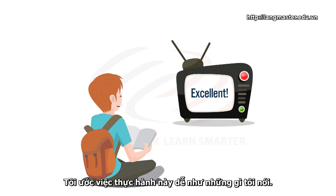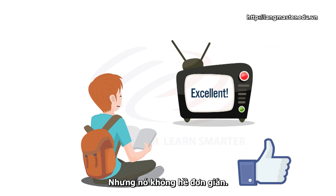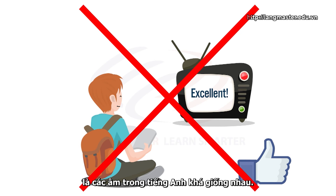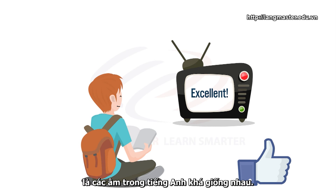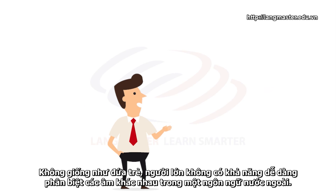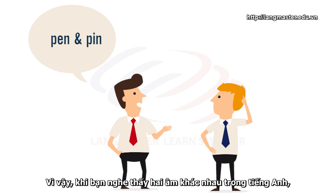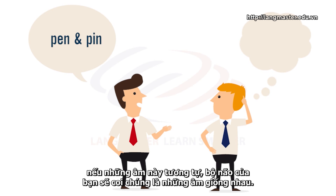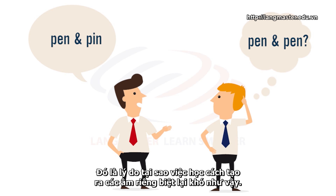Now, I really wish it were that simple, but it's not. There is a problem, and the problem is the sounds in English are very similar to each other. Unlike babies, adults don't have the ability to easily distinguish between all the different sounds in a foreign language. So when you hear two different sounds in English, if those sounds are similar, your brain might perceive those sounds as the same. That's why learning to make each sound separately may not work.